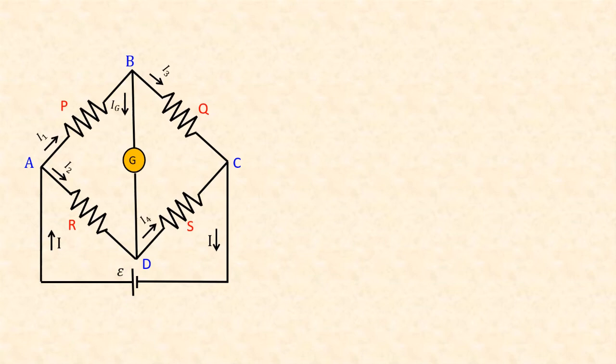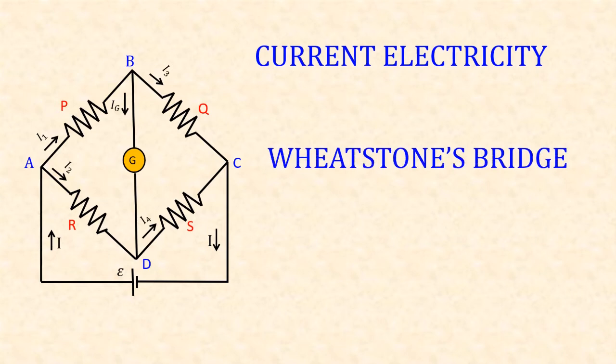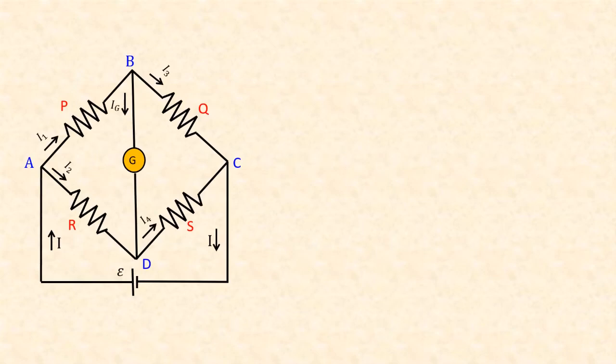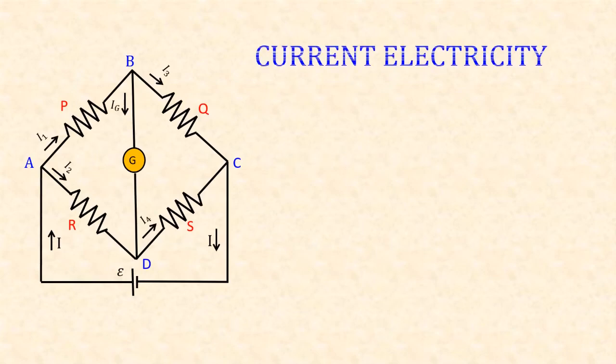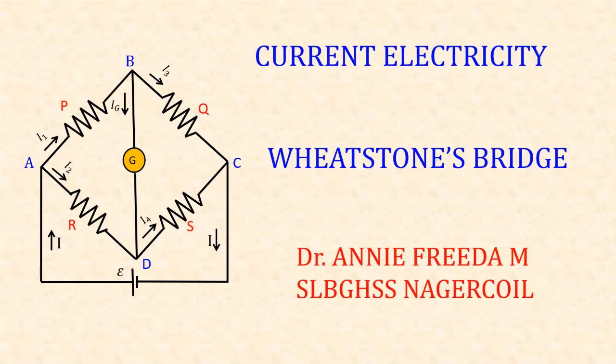In this video we are going to see about Wheatstone's bridge. It is an important 5 marks question in current electricity lesson. Wheatstone's bridge is an electrical circuit used to measure an unknown electrical resistance by balancing a bridge in a circuit, and it is also used to compare resistances. It is an application of Kirchhoff's rule.